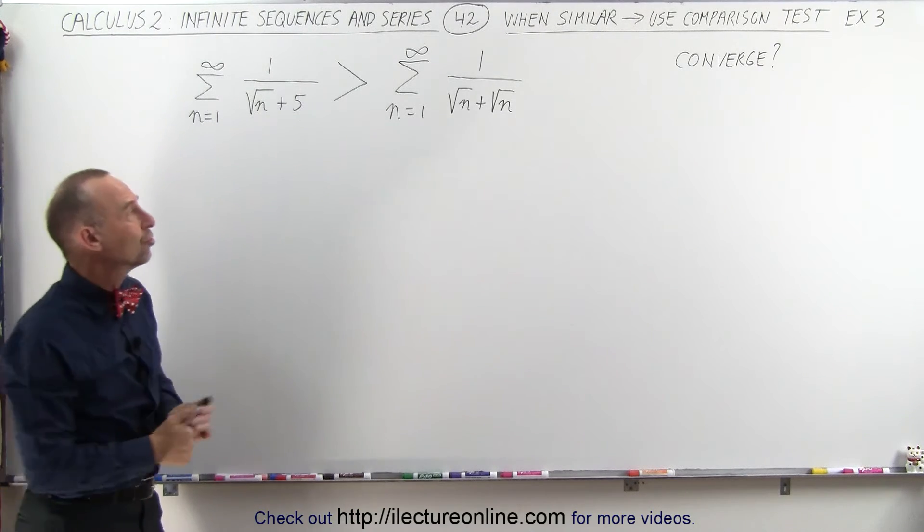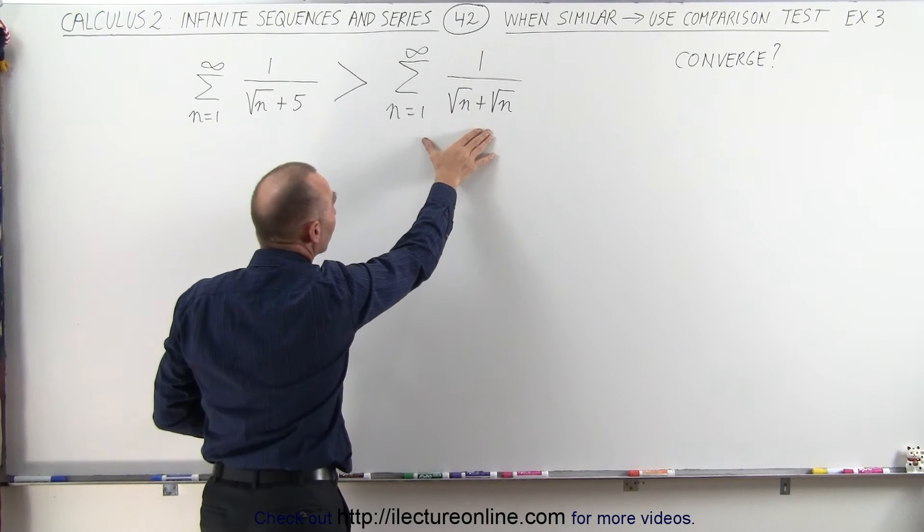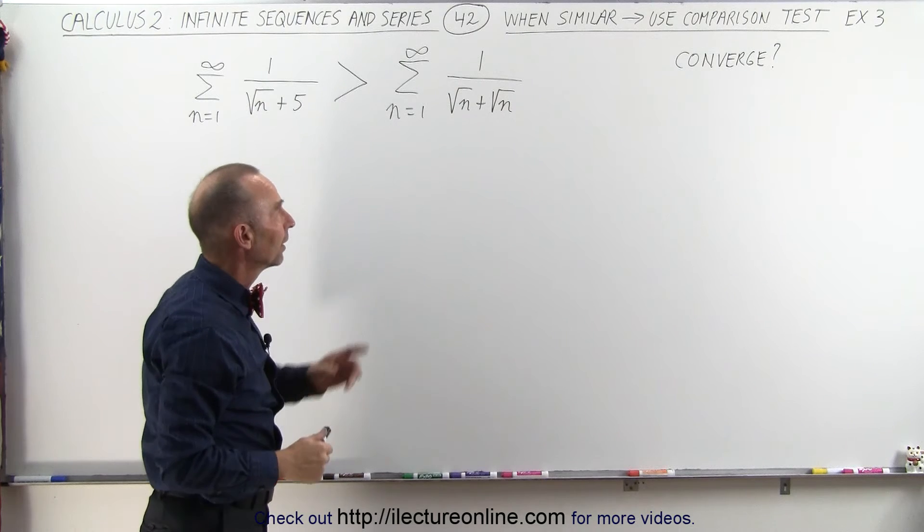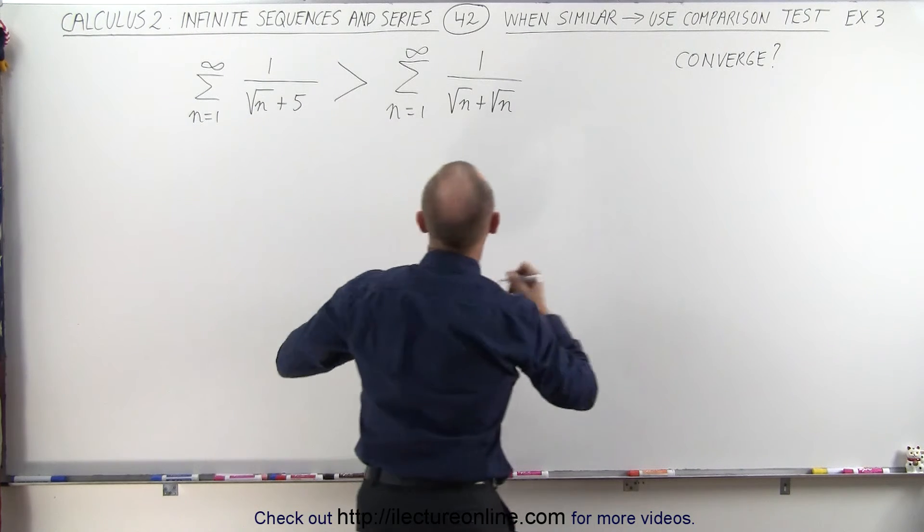Now if we can show that this does not converge, then we know that this does not converge either because we know it's greater. So let's add those together and see what we get.